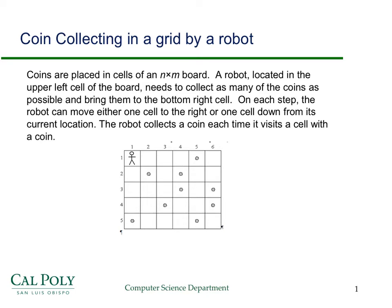There are some constraints, though. The robot can only move down one square or to the right one square. So an allowed path would be for the robot to go straight down one square at a time until it gets to position 5-1, pick up the coin there, and then go right all the way to the lower right-hand corner. In that path, the robot will pick up two coins — one at position 5-1 and one at position 5-5.